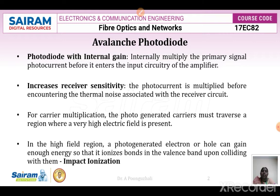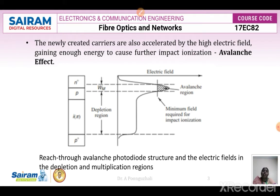When an electron hits with high energy, it collides with an atom present in the valence band, releases an electron, and that electron is freed from the covalent bond. This ionization is called impact ionization. The newly created carriers are also accelerated by the high electric field and gain enough energy to release more electrons from neighboring bonds. In that case, we get an avalanche effect.